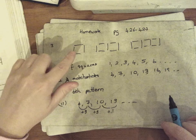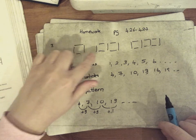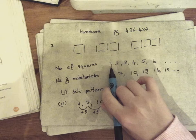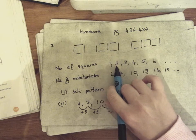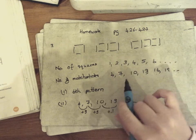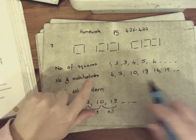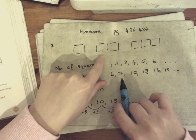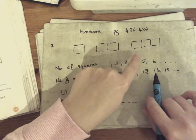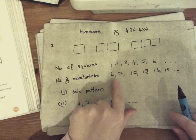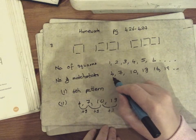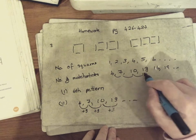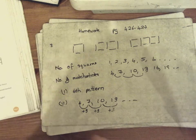Number 3 gives us a pattern like this. There's a square, 2 squares, 3 squares, etc. So the pattern of the squares goes 1, 2, 3, 4, 5, 6. The number of matchsticks also makes a sequence. There's 4 matchsticks here, there's 7 here, there's 10 here. You can clearly see that's a linear sequence and it goes up in 3s. So the next ones are 16, 19, etc.